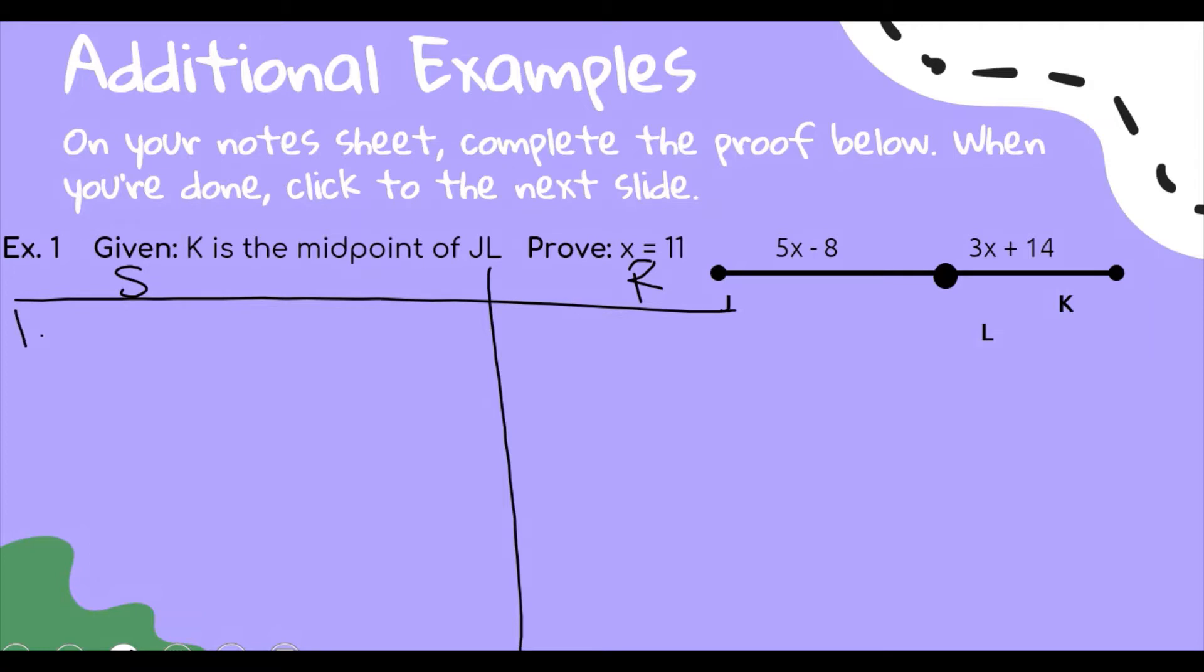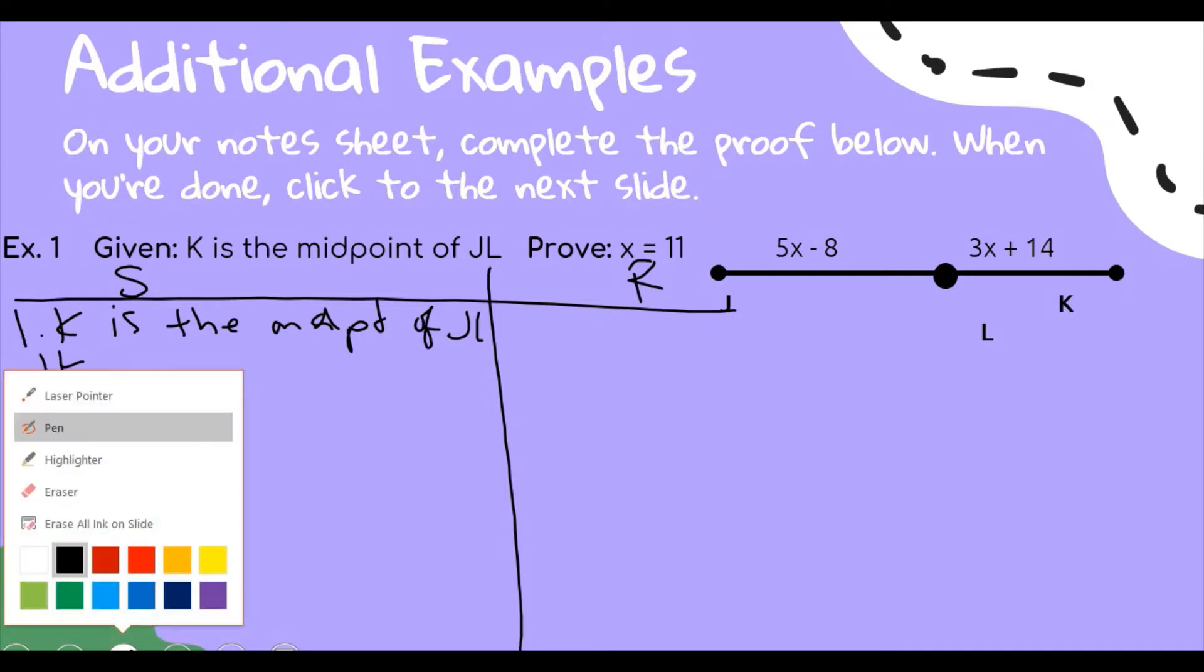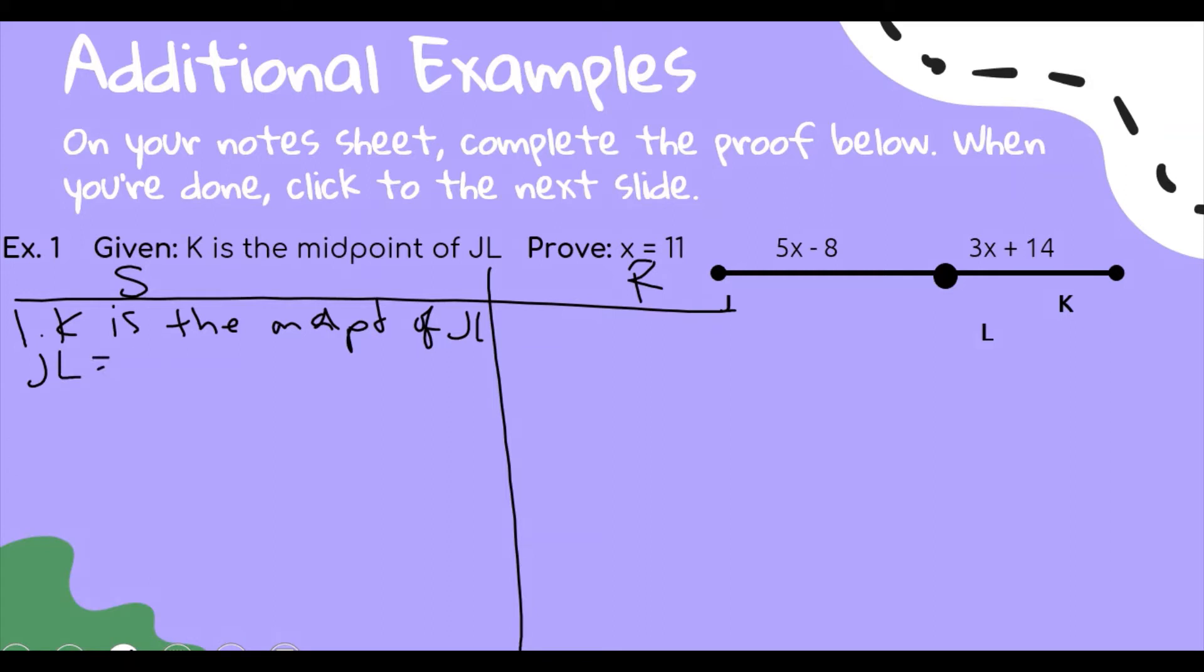We were told that K is the midpoint of JL. From the picture we know that JL is equal to 5x minus 8, and LK is equal to 3x plus 14. So that's the given.